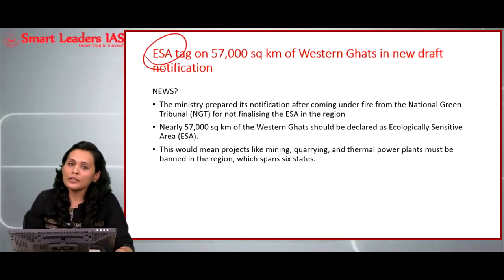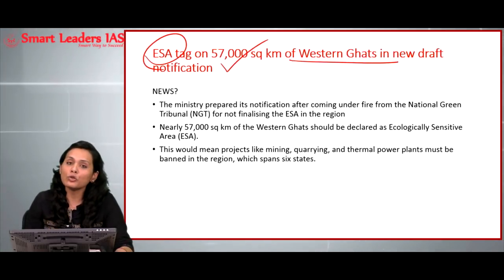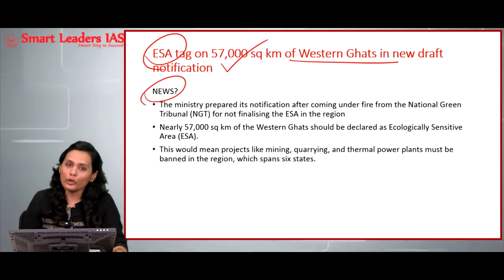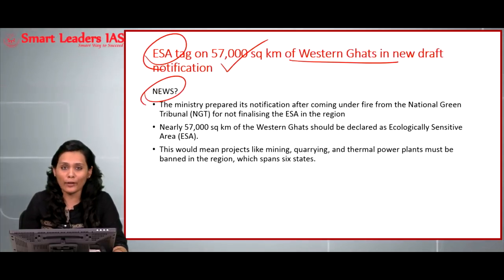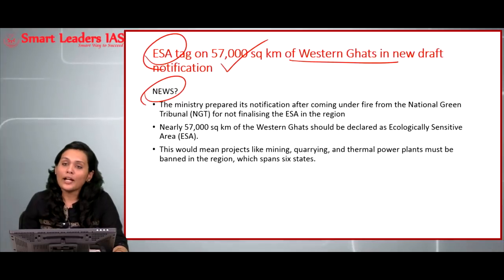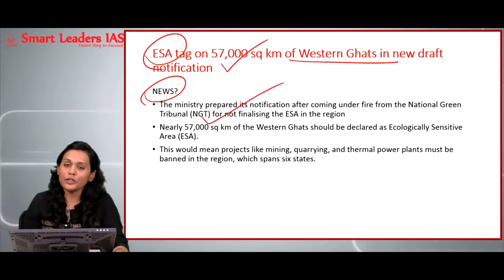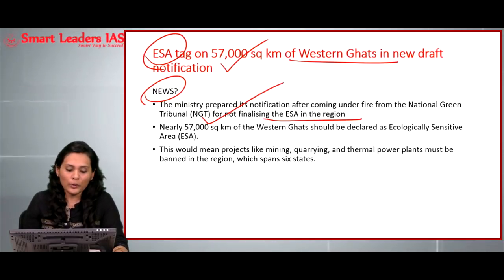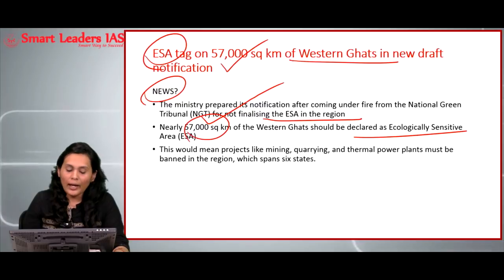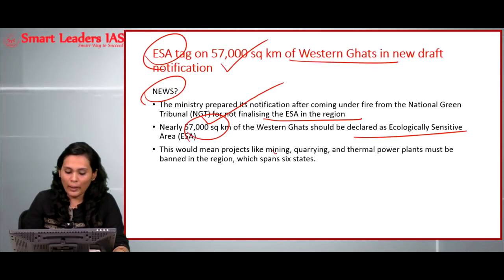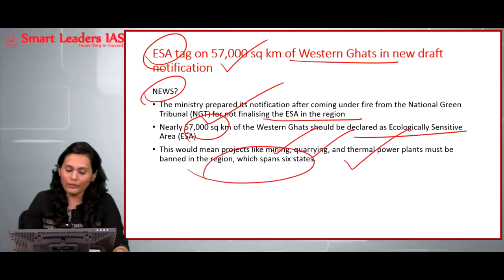The last article discusses ecologically sensitive areas, dealing with a recent notification by the Environment Ministry to extend the ESA to 57,000 square kilometers of the Western Ghats in a new draft notification. The background is that the state of Kerala recently witnessed devastating floods, and many ecologists have attributed non-compliance with the Gadgil Committee report as one of the main factors for the devastating effects of the floods on the Western Ghats. The National Green Tribunal criticized the Environment Ministry for not finalizing the ESA for the Western Ghats region, forcing the ministry to release this draft notification declaring 57,000 square kilometers as ecologically sensitive areas, completely banning mining, quarrying, and thermal power plants across almost six states.